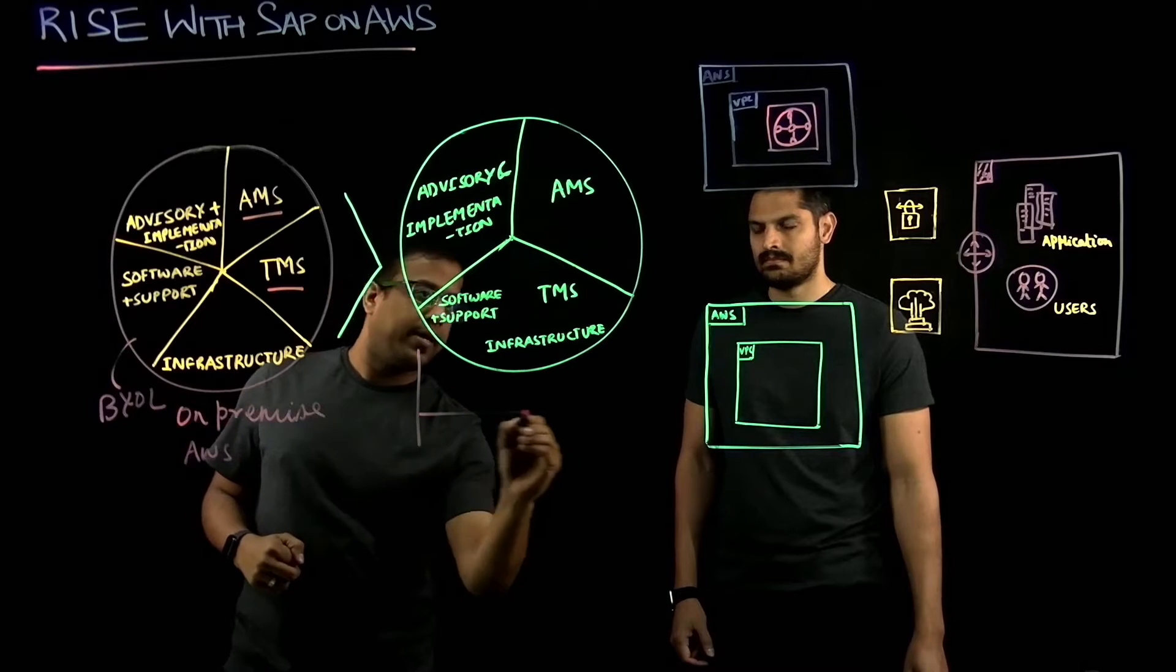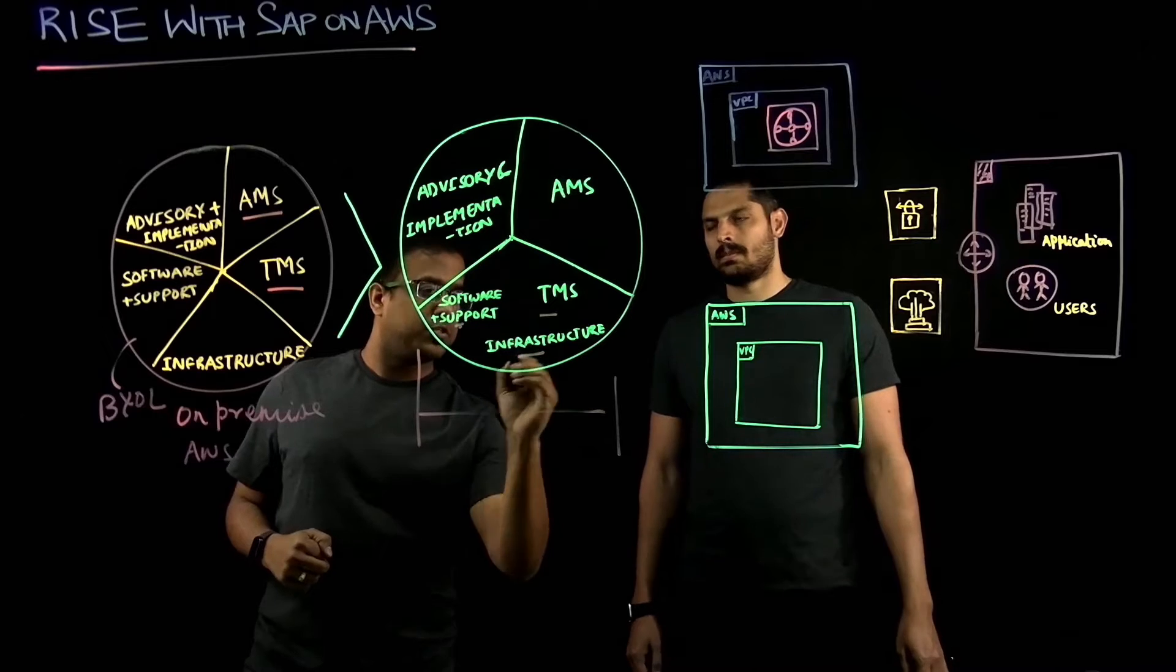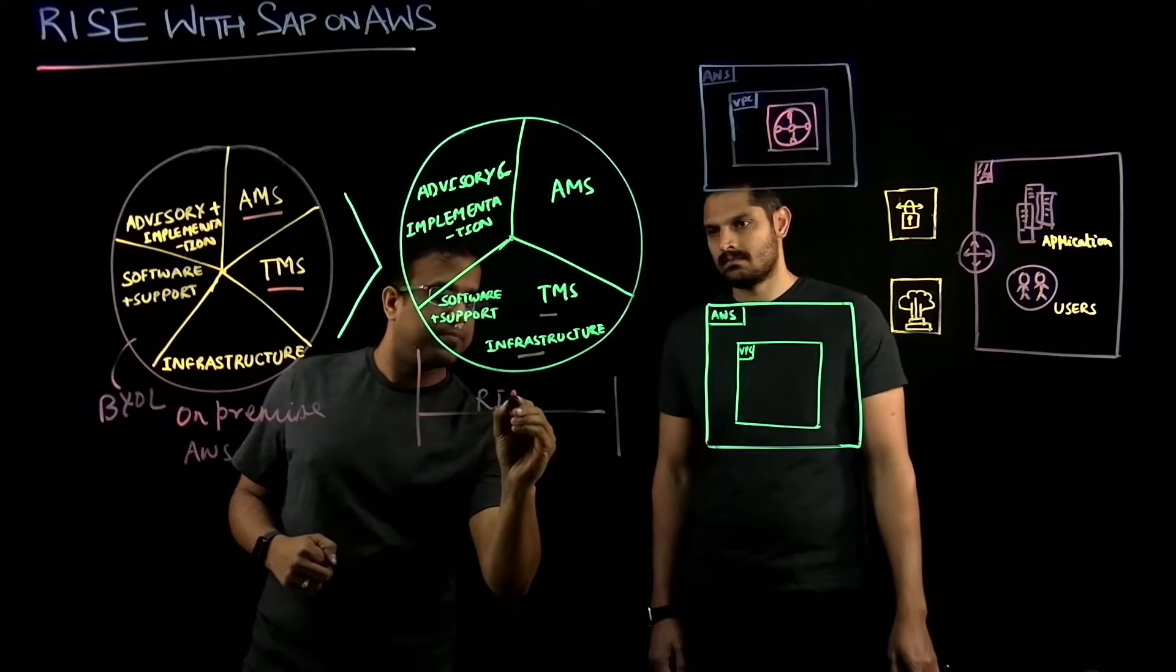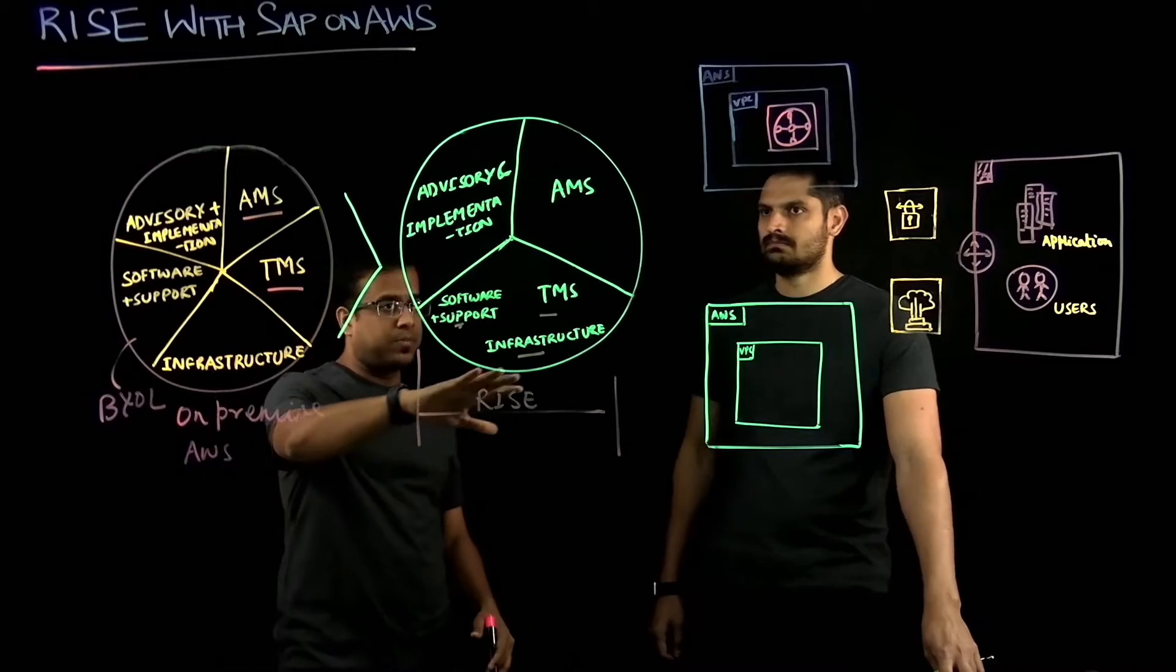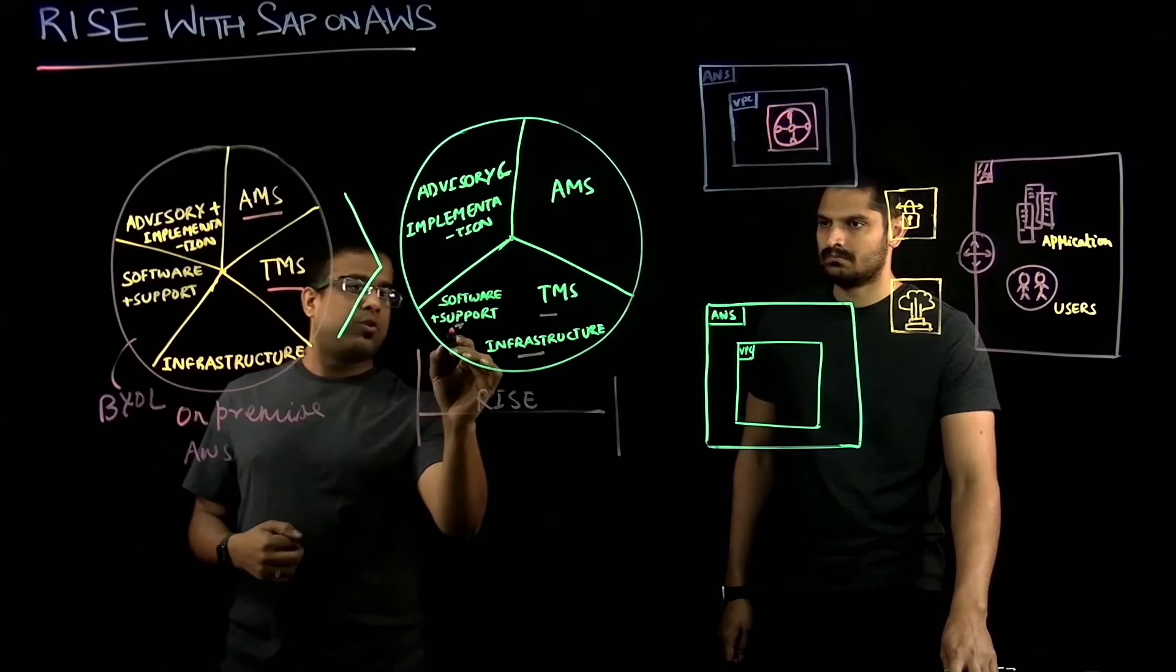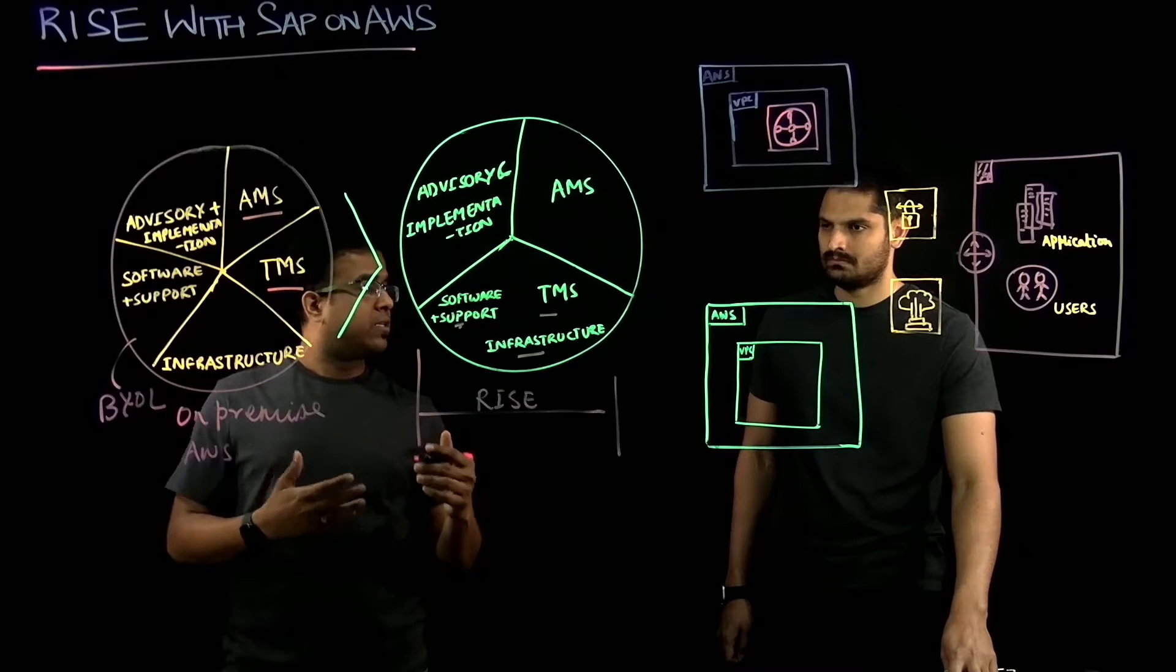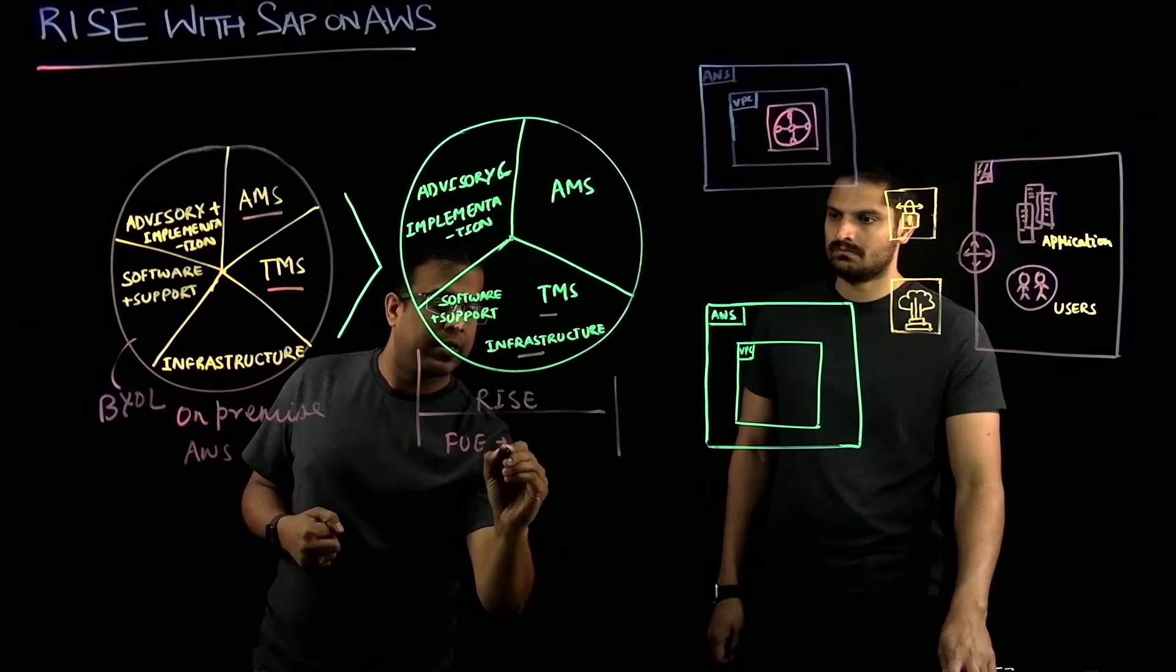As part of Rise with SAP, SAP has combined technical managed services, software support, and infrastructure together in a Rise construct. So SAP takes care of your technical managed services, SAP takes care of infrastructure deployment in their tenant for the customer, and software support is also by SAP as subscription license. They call it full user equivalent for S4HANA.